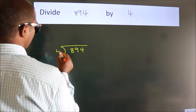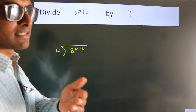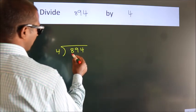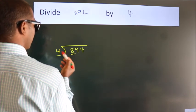Next, here we have 8. When do we get 8 in the 4 table? 4 times 2 is 8.